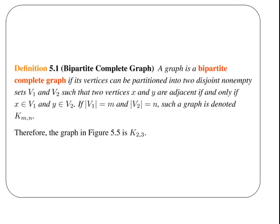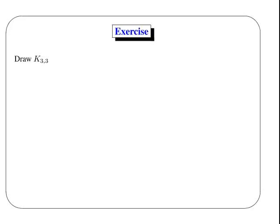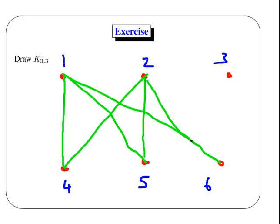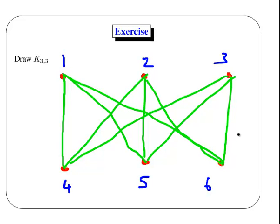What we just saw previously was a graph we would denote K(2,3). As a little exercise, draw K(3,3). The first group at the top contains vertices 1, 2, and 3. The second group below contains vertices 4, 5, and 6. Vertex 1 is connected to 4, 5, and 6; vertex 2 is connected to 4, 5, and 6; and vertex 3 is connected to 4, 5, and 6. So that is K(3,3).